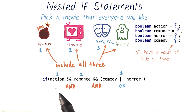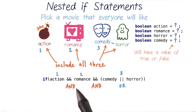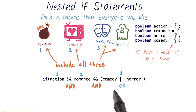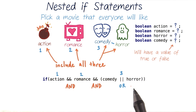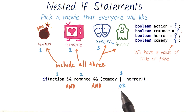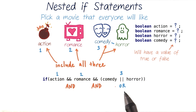We can combine all our preferences in one test condition by using logical operators. By separating all three of our preferences with AND operators, all of them must be true in order for the whole test condition to be true. For our third preference, our friend wanted either comedy or horror, so as long as one of these is true, this whole combination will also be true.